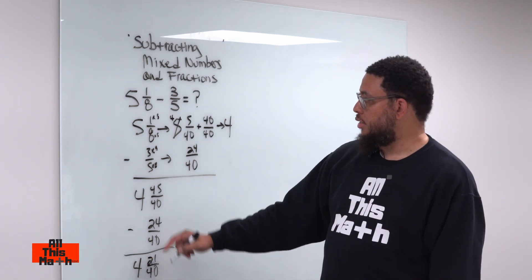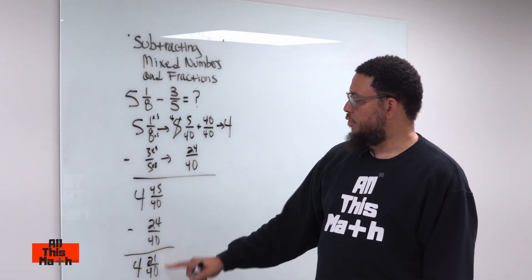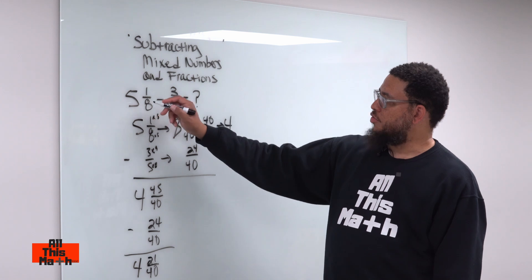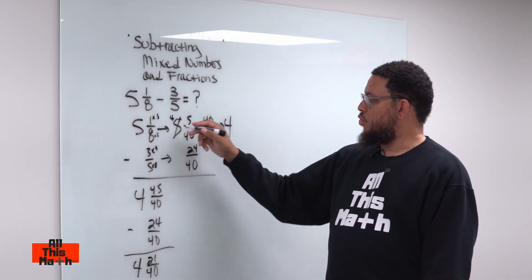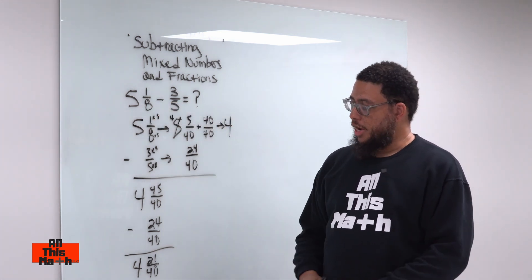And this fraction cannot be reduced because the only common factor 21 and 40 have is one. So, that means we're done. So, the final answer, four and 21 fortieths. Notice what we did. We had to find common denominators. We had to also borrow, and then we were able to subtract. And that's today's lesson.